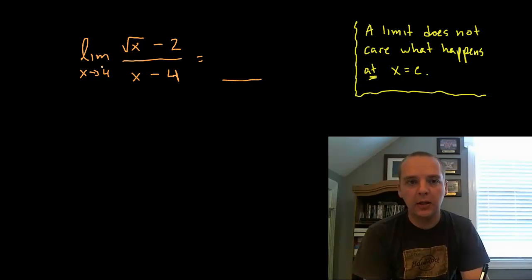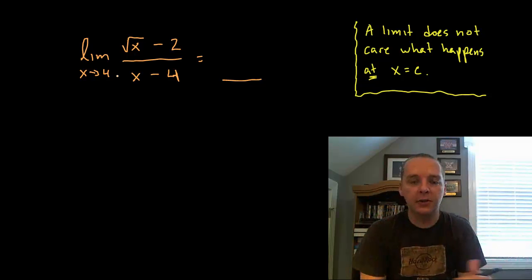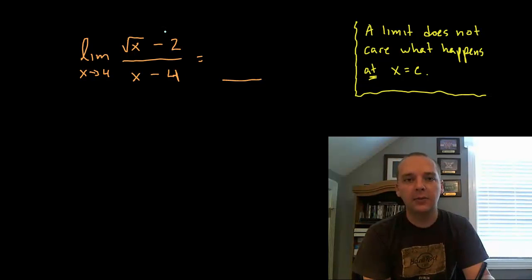Now sometimes we get lucky and we can take this value and plug it into the expression here. As long as this function is continuous at this value, then the limit will match what the function value is. But what we notice for this example, as with a lot of these limit examples, is when you try to take 4 and plug it in you actually get 0 over 0, and that's what we call an indeterminate form.